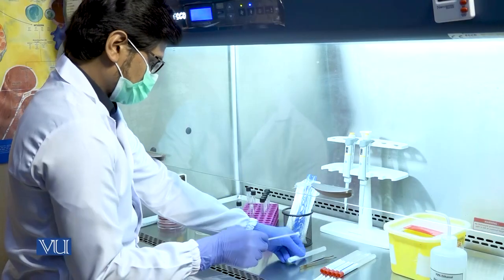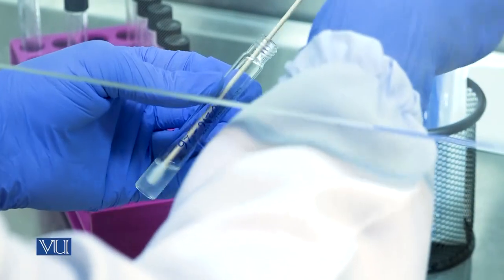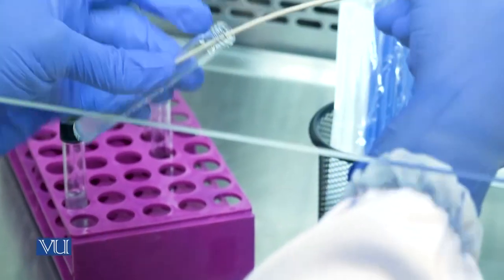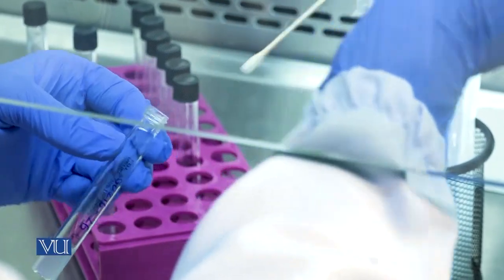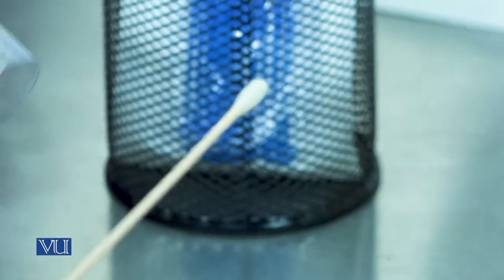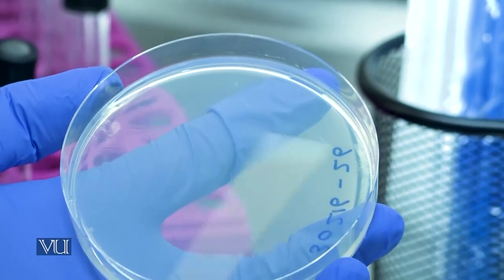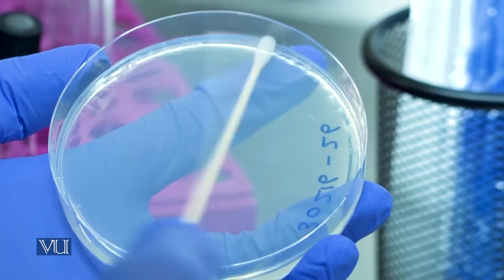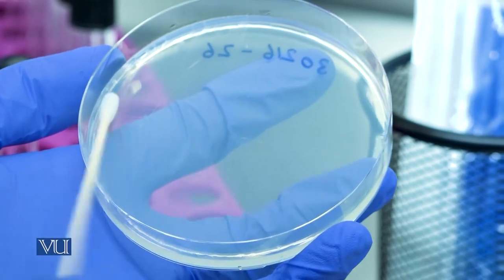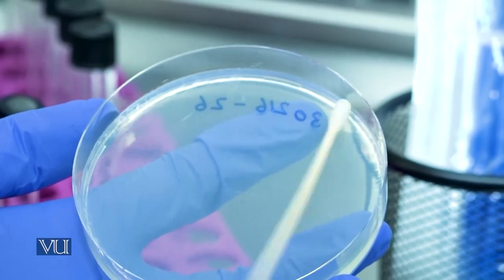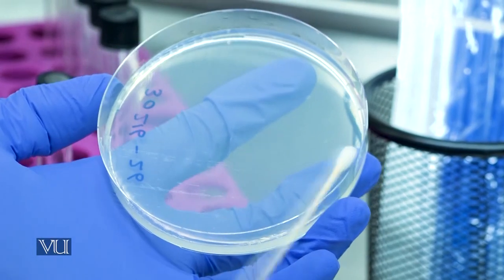Third step is, using a sterile swab, remove excess fluid by pressing and rotating the swab against the side of the tube above the level of the suspension. Swab evenly over the surface of the medium in three directions, rotating the plate approximately 60 degrees to ensure even distribution.